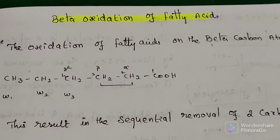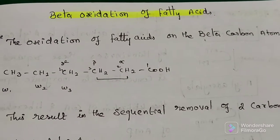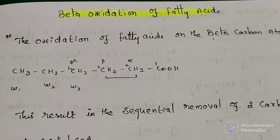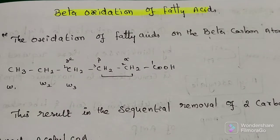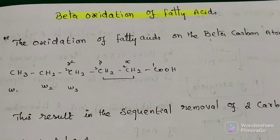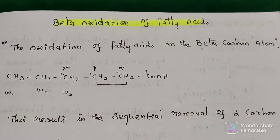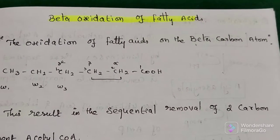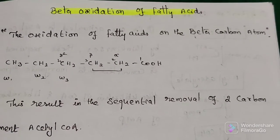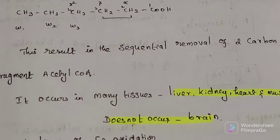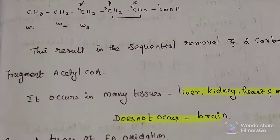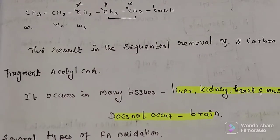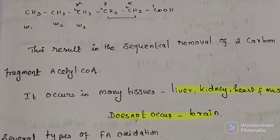Today's topic is beta oxidation of fatty acid — the breakdown of a fatty acid to acetyl-CoA. It occurs in mitochondria and is an aerobic process. Beta oxidation of fatty acid is defined as the oxidation of fatty acid on the beta carbon atom, resulting in the sequential removal of two carbon fragments. The acetyl-CoA produced is fed directly into the Krebs cycle.